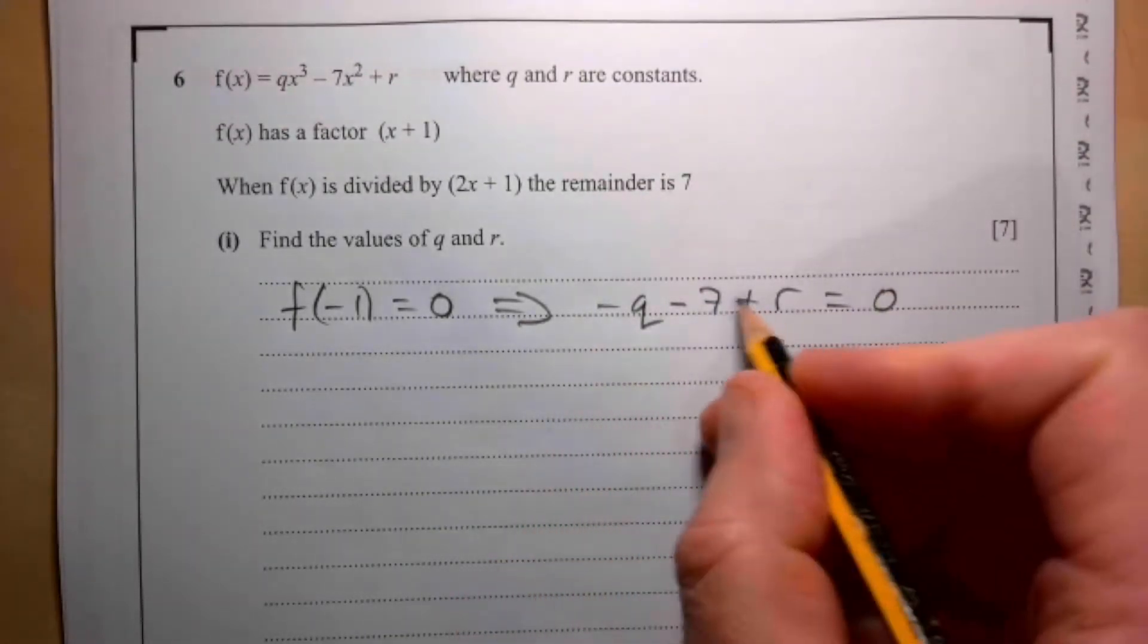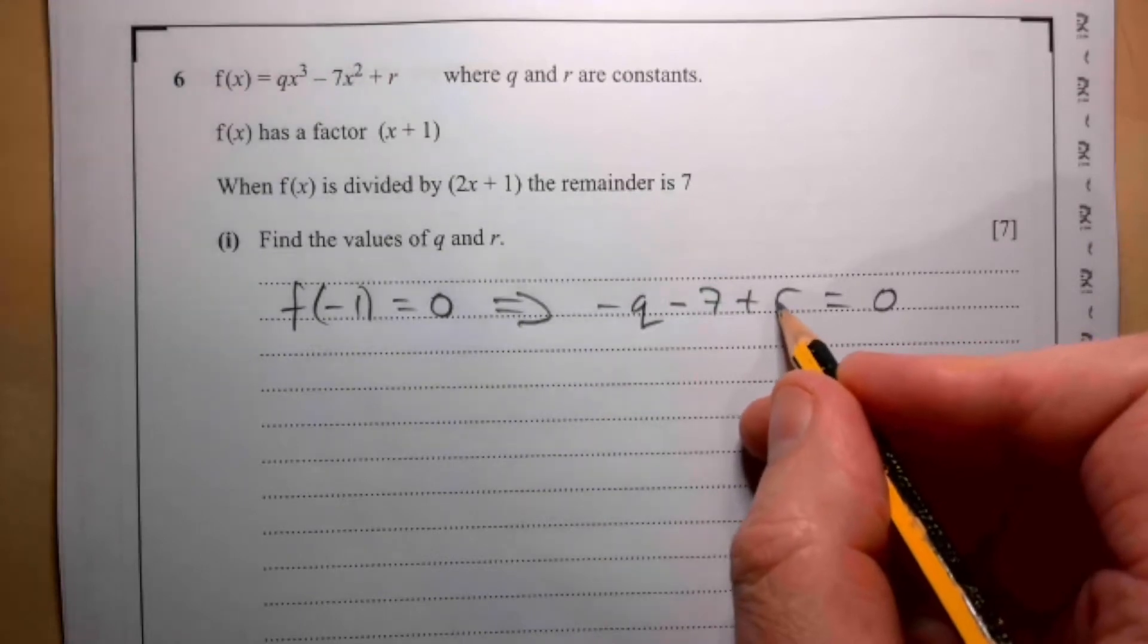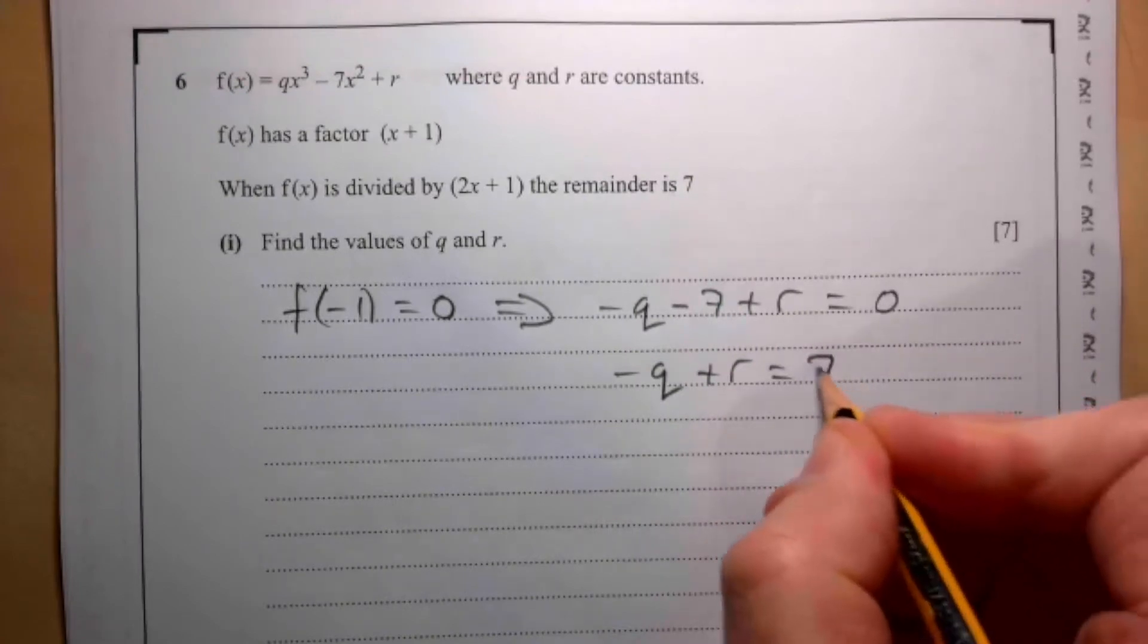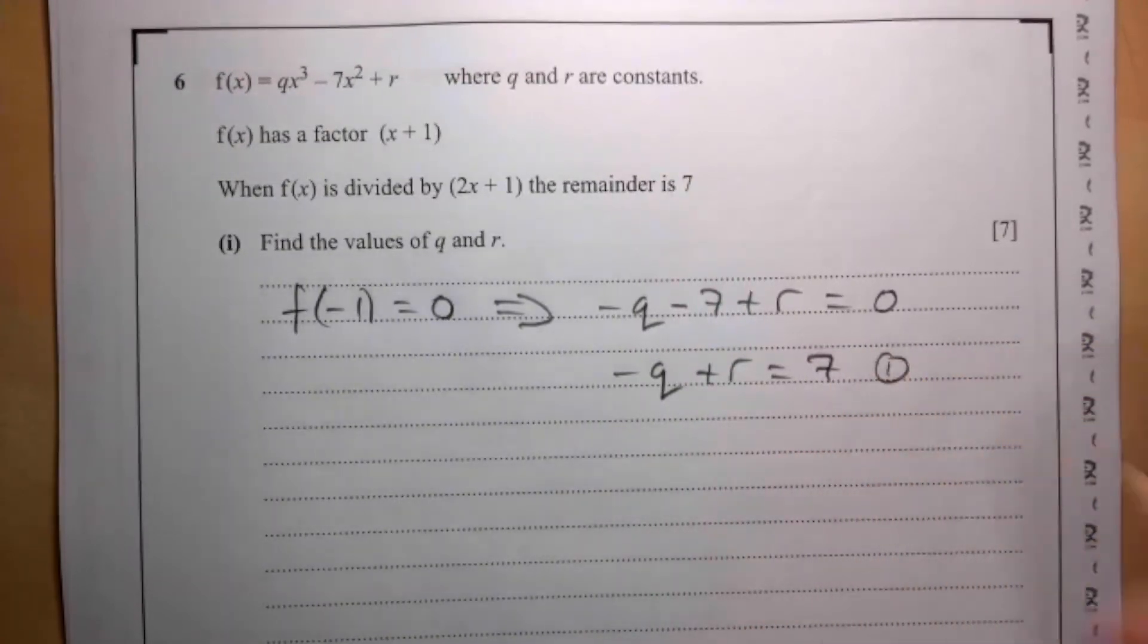Rearranging that, -q + r equals 7. I suspect we're going to get two equations.